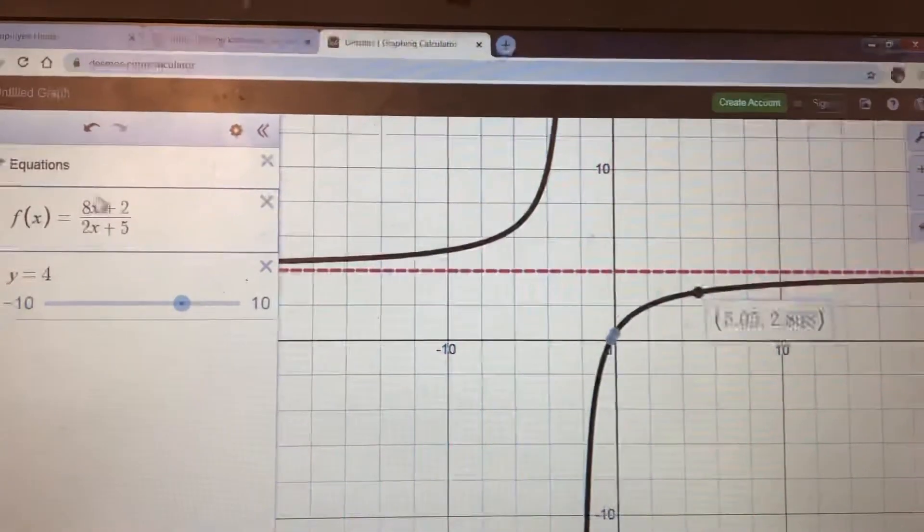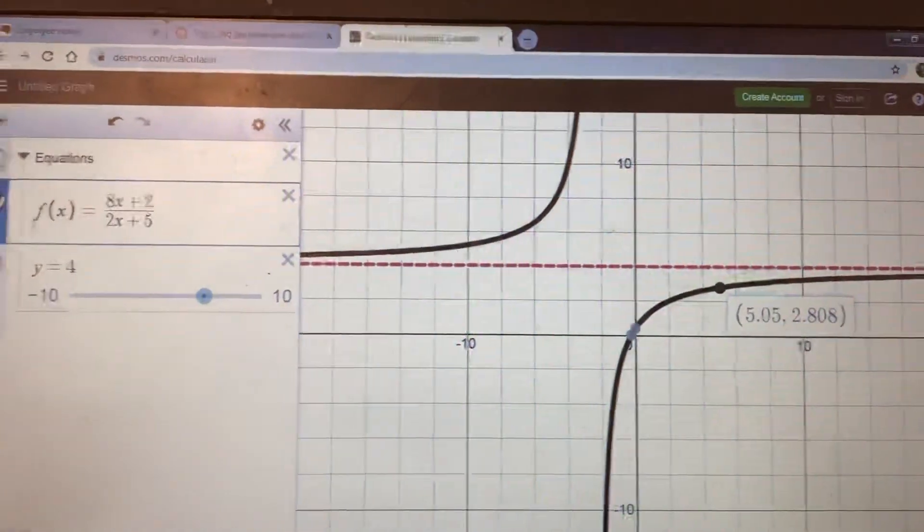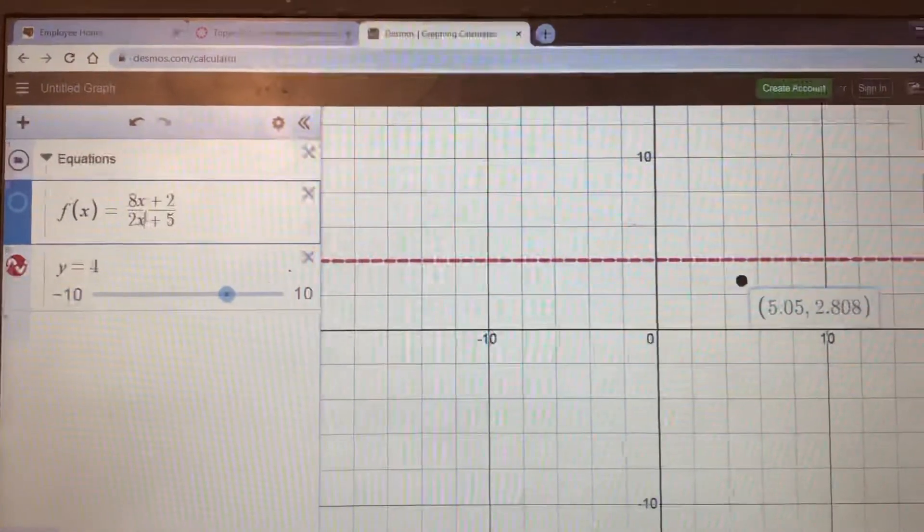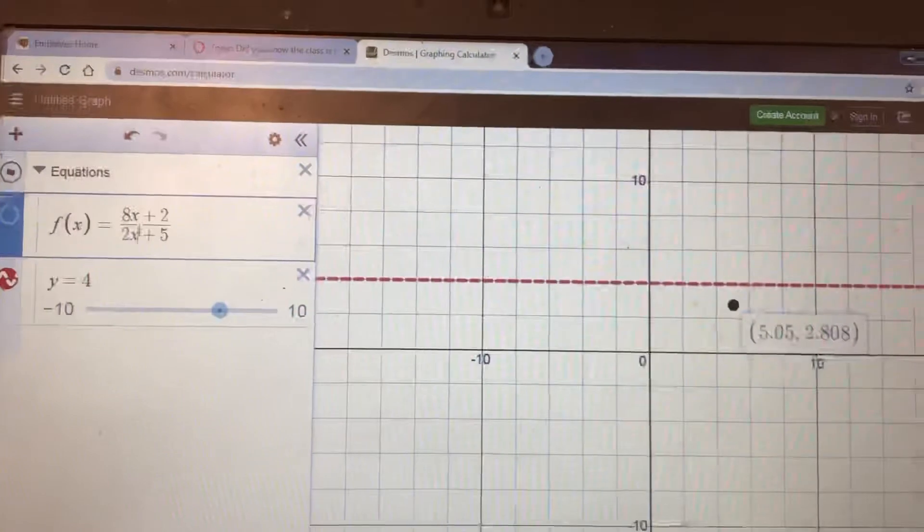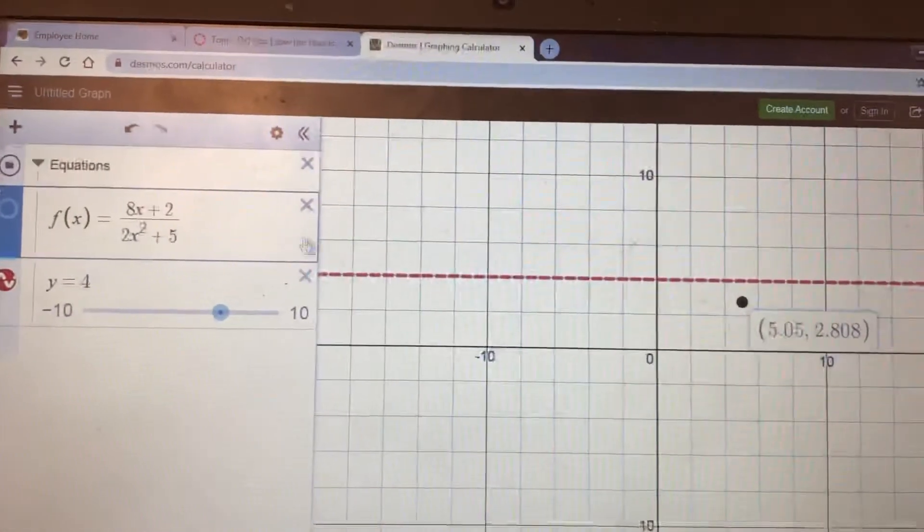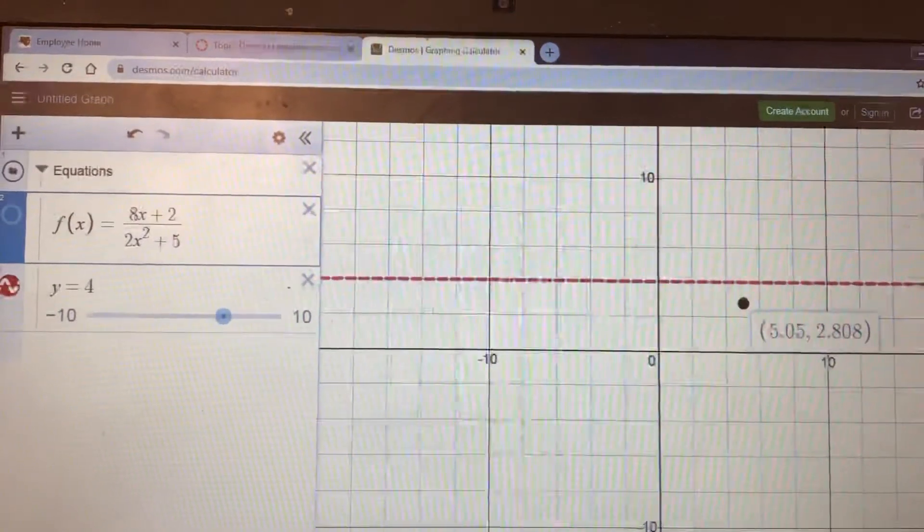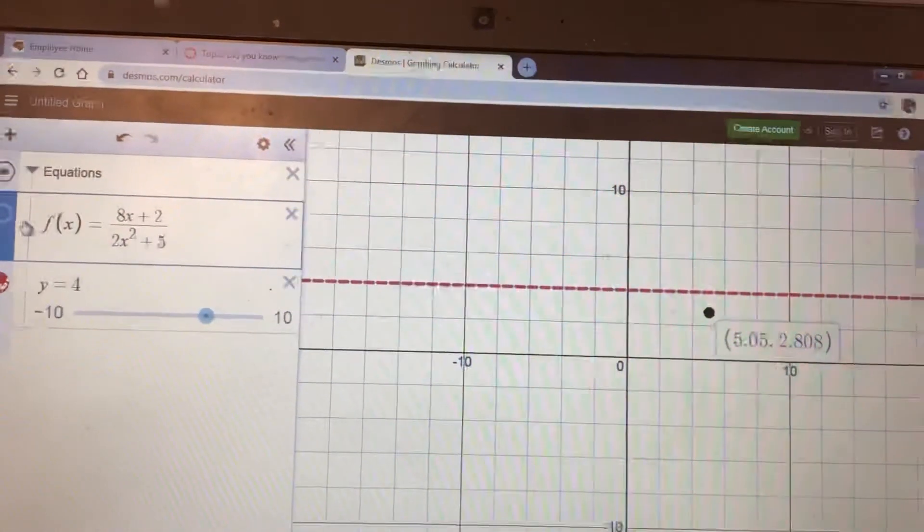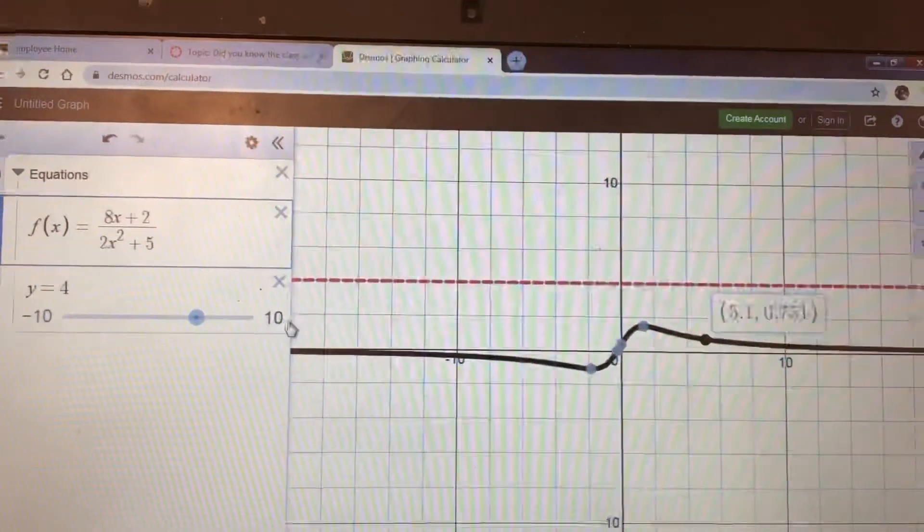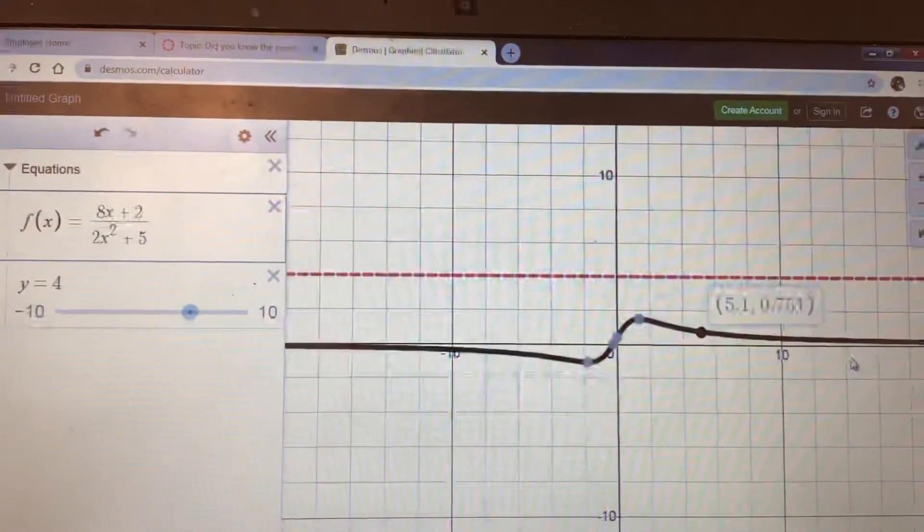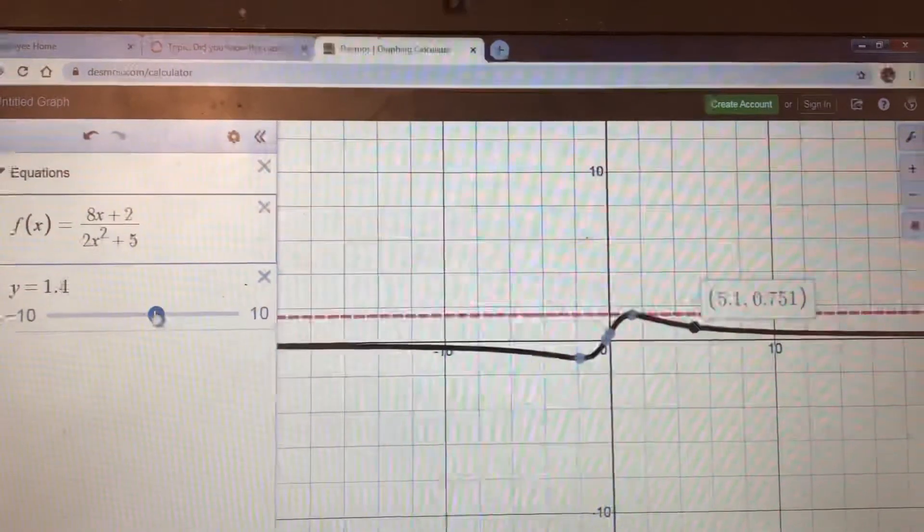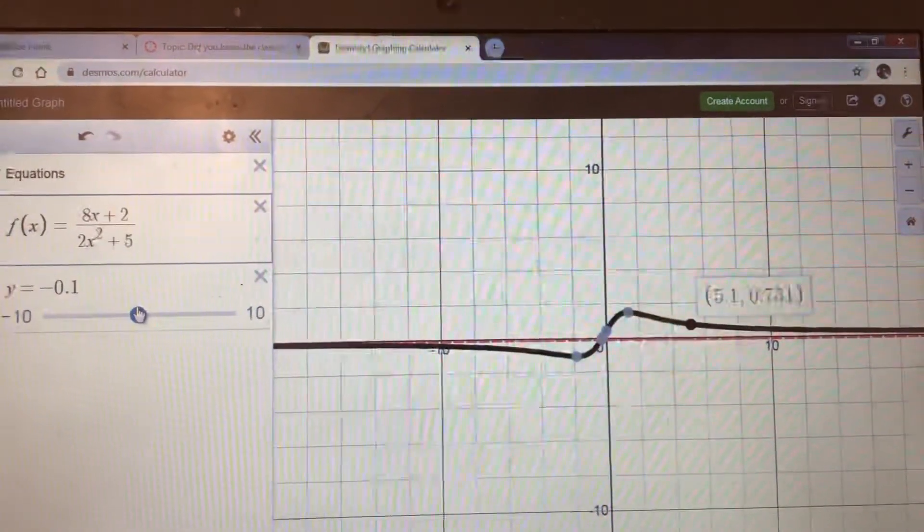So we've cracked it open, except not really because there's more to the story than that. It does have to do with the ratio of leading coefficients, but watch this. Let's say that I leave the leading coefficients alone but on this x on the bottom I put a square on it. Now the ratio of leading coefficients is still 8 over 2 which is 4, but watch what happens when I turn the graph on. Whoa, what is that? And more importantly, where is its horizontal asymptote?